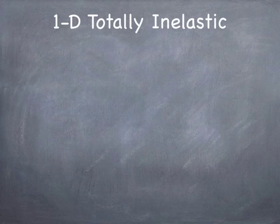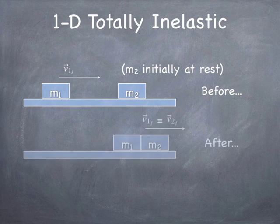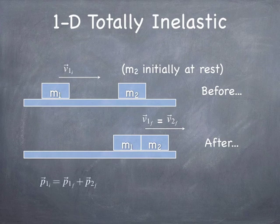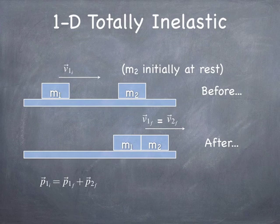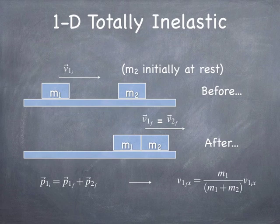Let's look at an example. We have an object moving to the right with speed v1, and a second object m2 initially at rest. If they are involved in a totally inelastic collision, the two objects stick together, so their final velocities must be equal. We write down that the momentum before and the momentum after are equal: m1 times v1_initial equals (m1 + m2) times v_final. So v_final equals m1 divided by the sum of the masses, times the initial velocity of mass 1. That's simply demanding that the total momentum of the two-block system is the same before and after the collision.